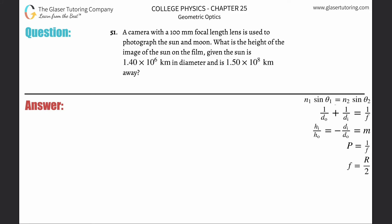Number 51: A camera with a 100 millimeter focal length lens is used to photograph the sun and moon. What is the height of the image of the sun on the film, given the sun is 1.4 times 10 to the 6 kilometers in diameter and is 1.5 times 10 to the 8 kilometers away?